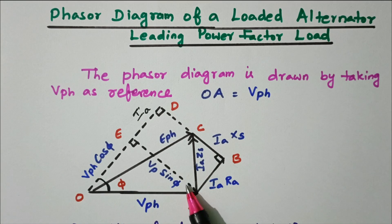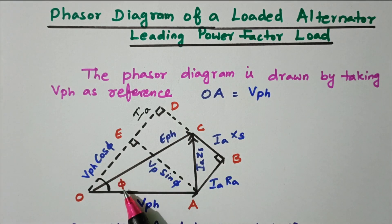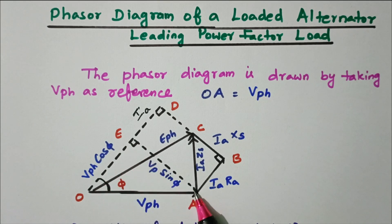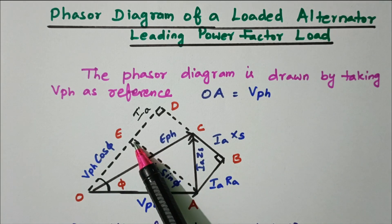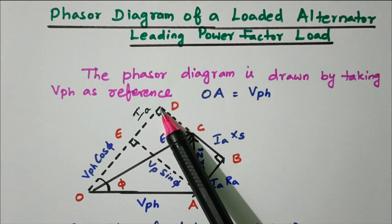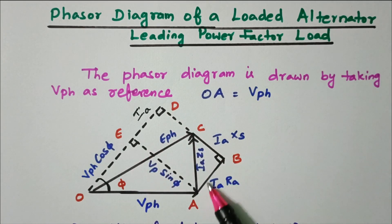The triangle is extended: point C is extended to D, and O is extended to E, giving us the triangle O, D, C. The portion DE equals AB, which equals IA·RA. Similarly, AE equals DB, which equals V_phase·sin φ. OE is V_phase·cos φ. So from the extended triangle ODC, OD equals OE plus ED, and DC equals BD minus BC.